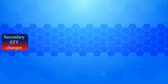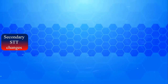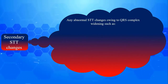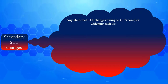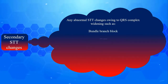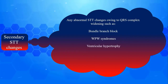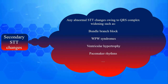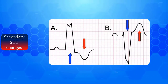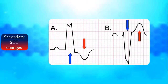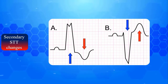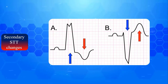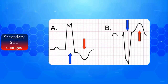In addition to cardinal findings, secondary STT wave changes are frequently observed in LBBB. Secondary STT wave changes is an umbrella term referring to any abnormal STT wave changes due to QRS complex widening. It is associated with bundle branch block, WPW syndrome, ventricular hypertrophy, pacemaker rhythms, and so on. In general, secondary STT changes are discordant — meaning ST segment and T wave changes are in the opposite direction to QRS complex polarity. Therefore, when a deep S wave is present, ST elevation with upright T wave is recorded; conversely, when a prominent R wave is present, ST depression with inverted T wave is seen.